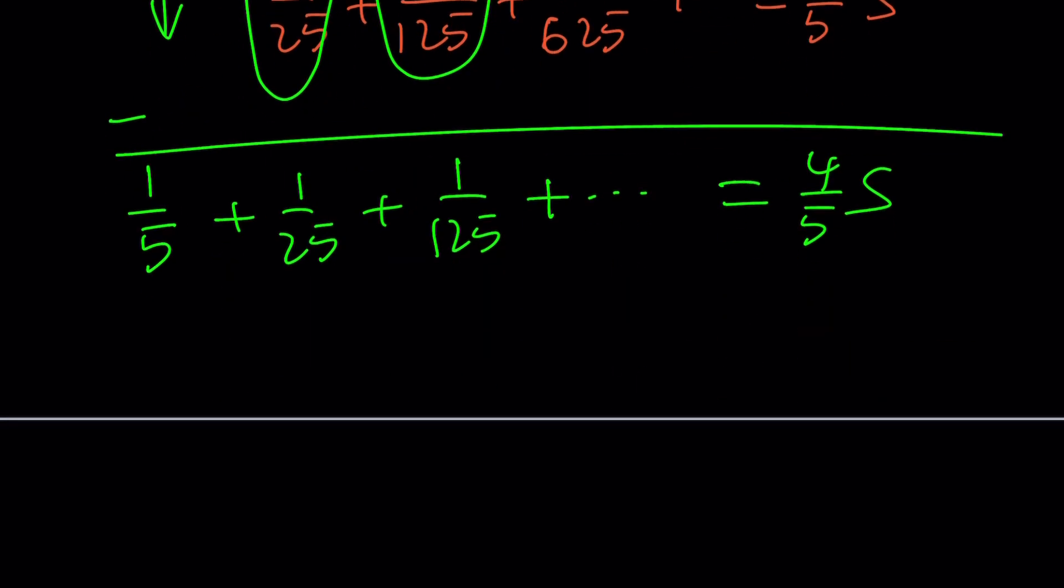Now, the expression on the left-hand side, we do know how to add because it's an infinite geometric series, and the formula is A1, which is the first term, or just A, divided by 1 minus R, which is 1 fifth again.